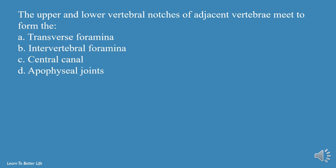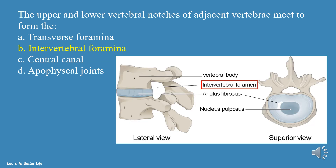The upper and lower vertebral notches of adjacent vertebrae meet to form the: a. Transverse Foramina, b. Intervertebral Foramina, c. Central Canal, d. Apophysial Joints. The answer is b, Intervertebral Foramina.